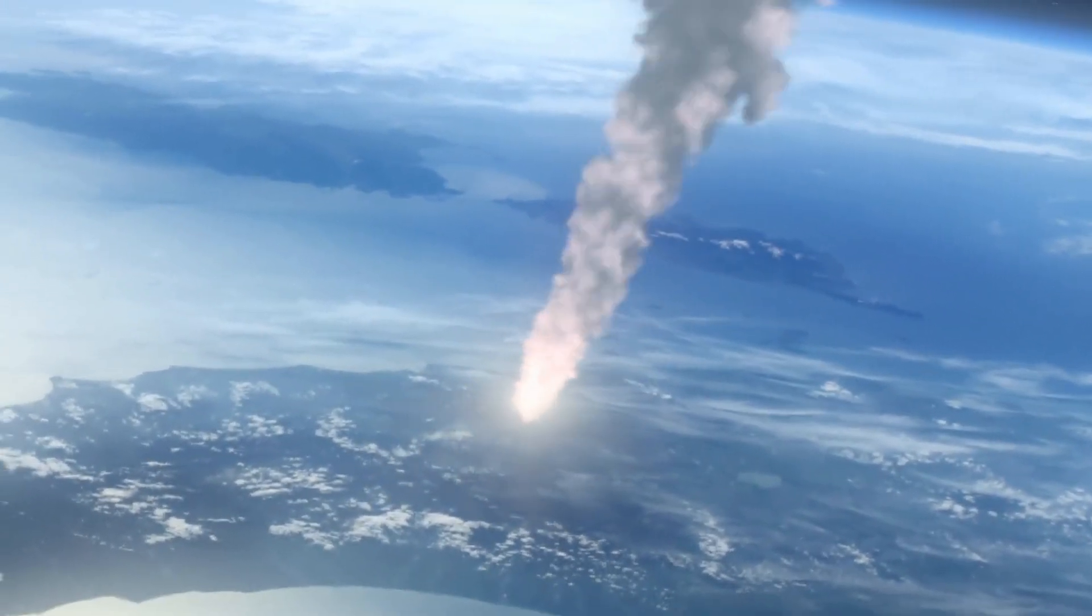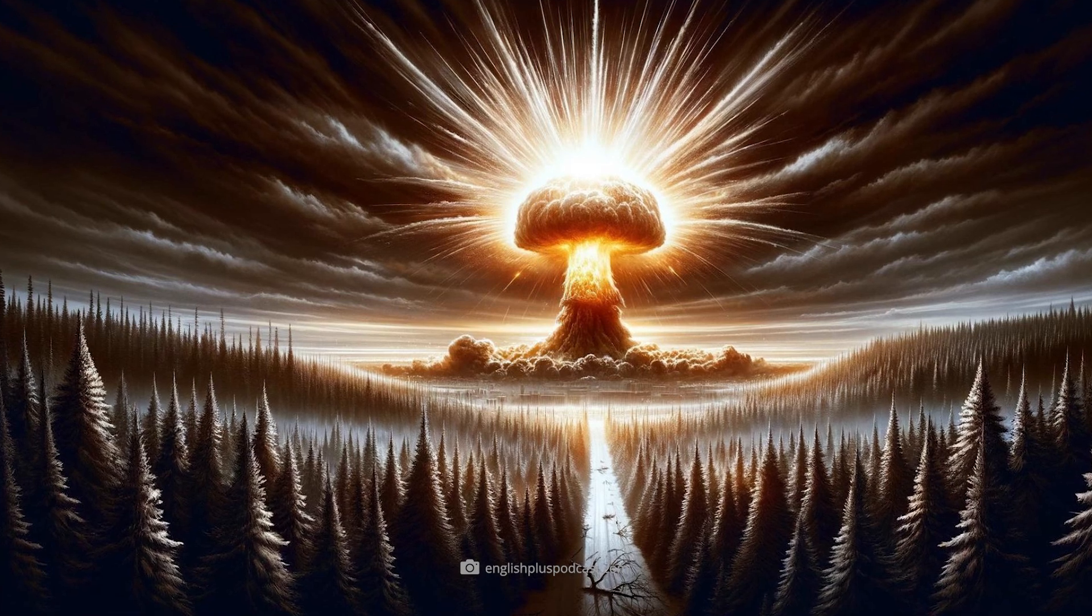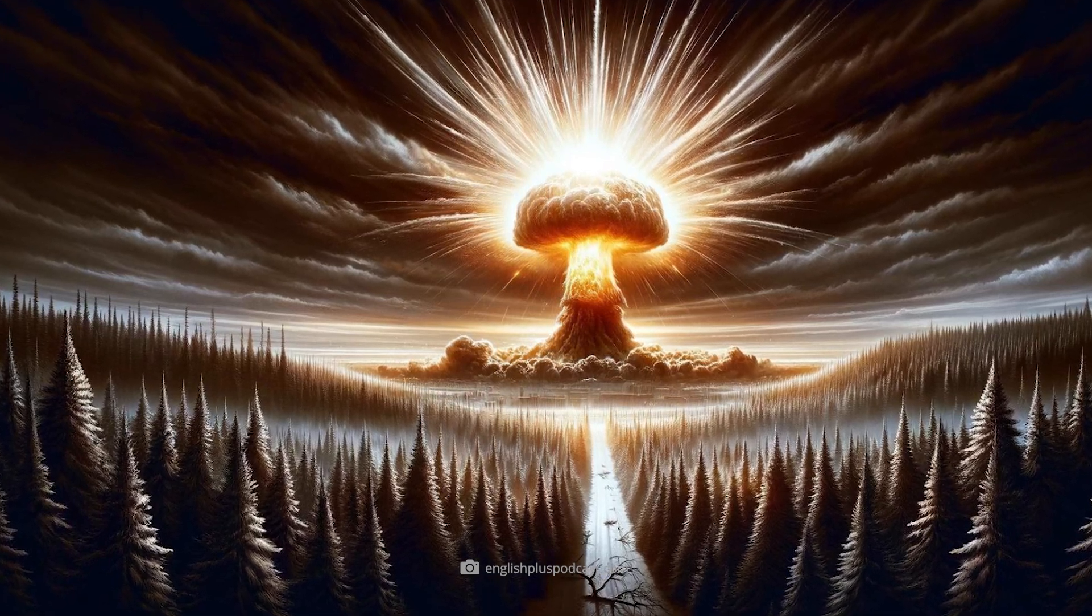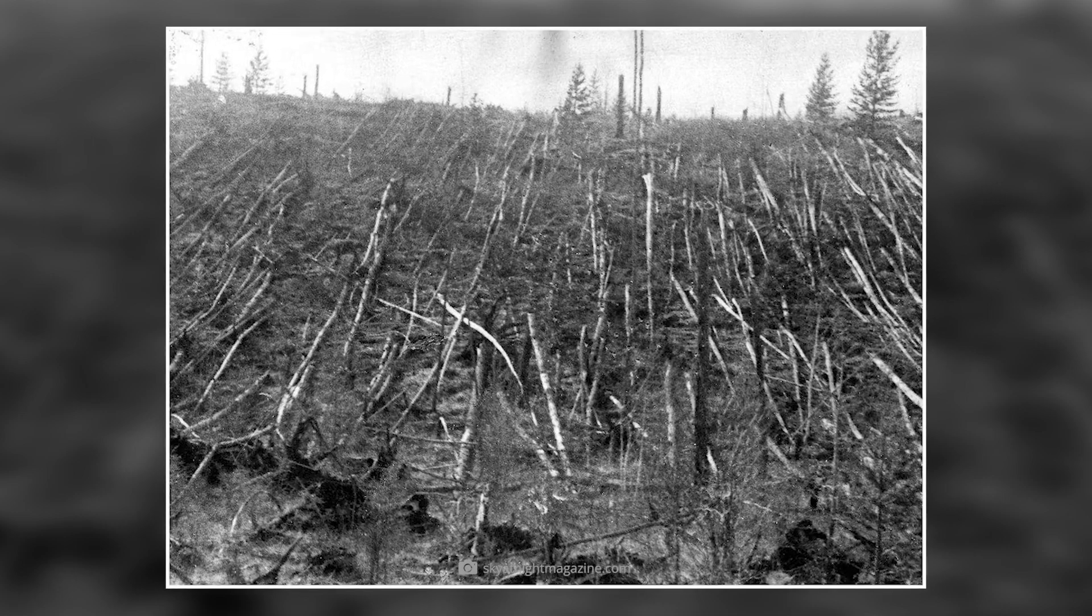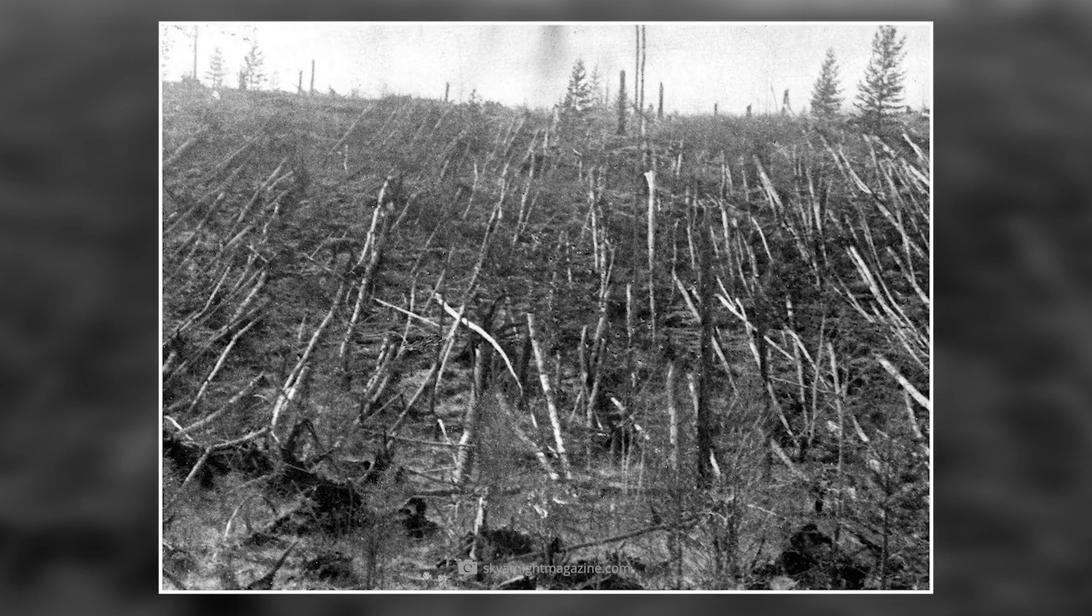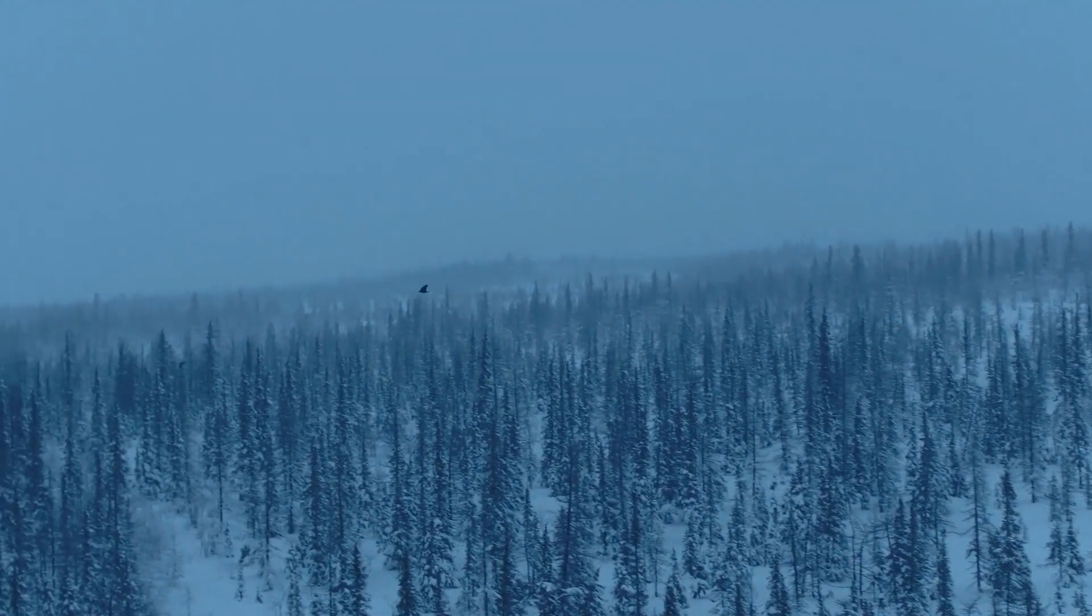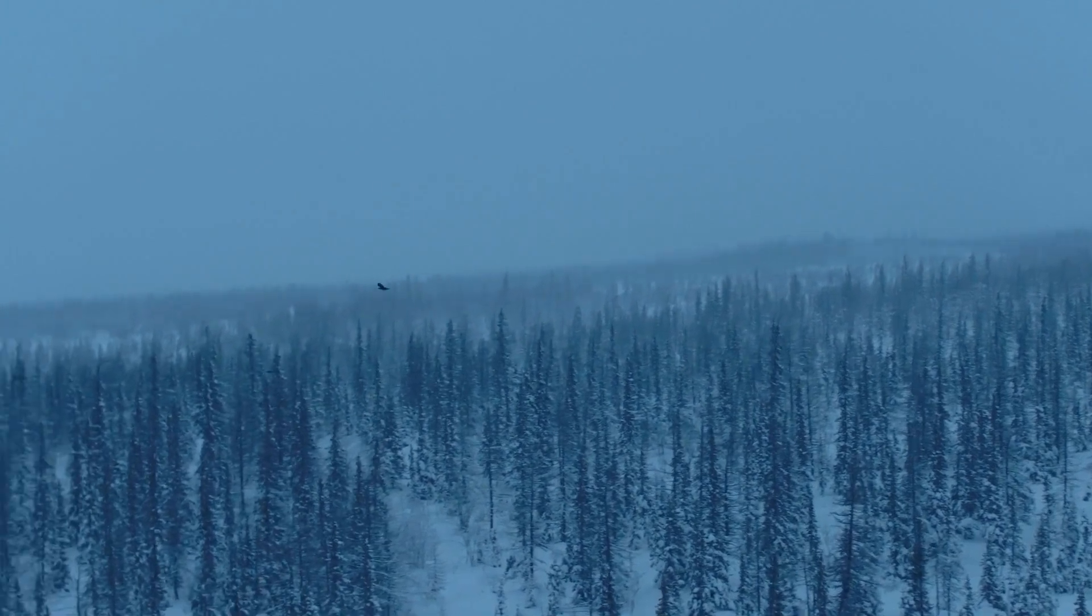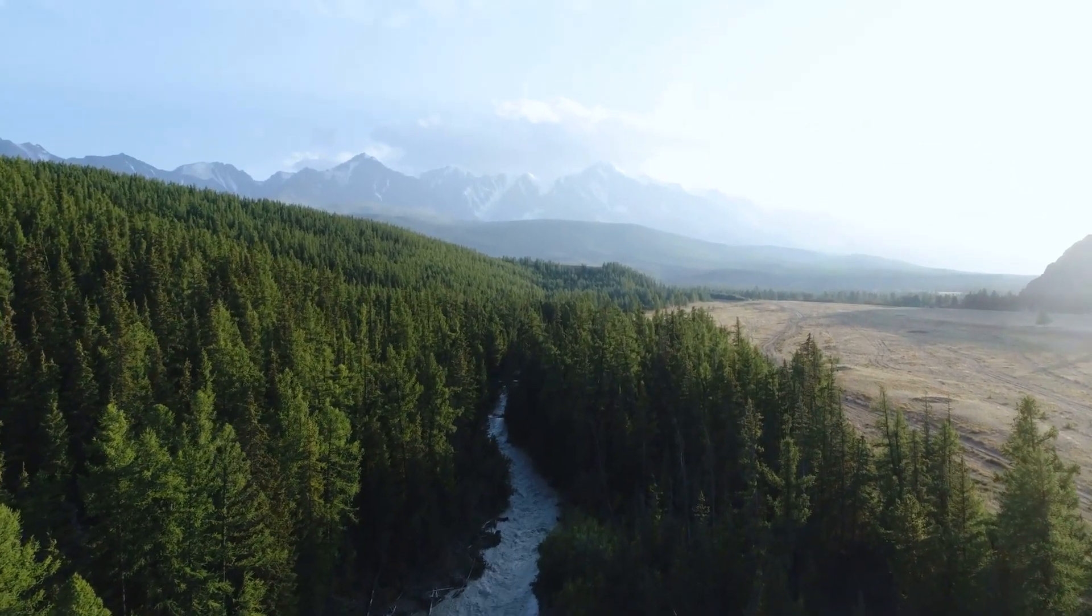Comet or asteroid impacts have also occurred more recently. The Tunguska event in 1908 is an example of a celestial body, probably a comet, exploding in the Earth's atmosphere, devastating over 2,000 square kilometers of forest in Siberia. The explosion was so powerful that it released an estimated 15 megatons of energy, which is equivalent to about 1,000 Hiroshima bombs. Fortunately, this incident occurred in an uninhabited area, but the destructive power shows how dangerous an impact in populated areas could be.